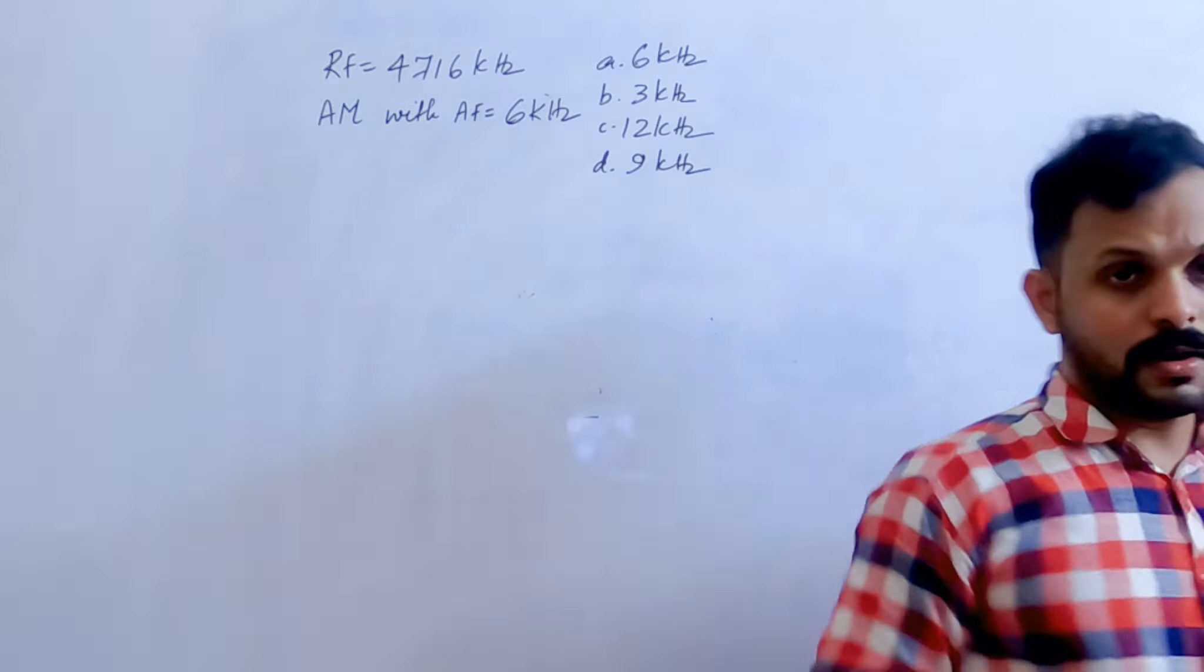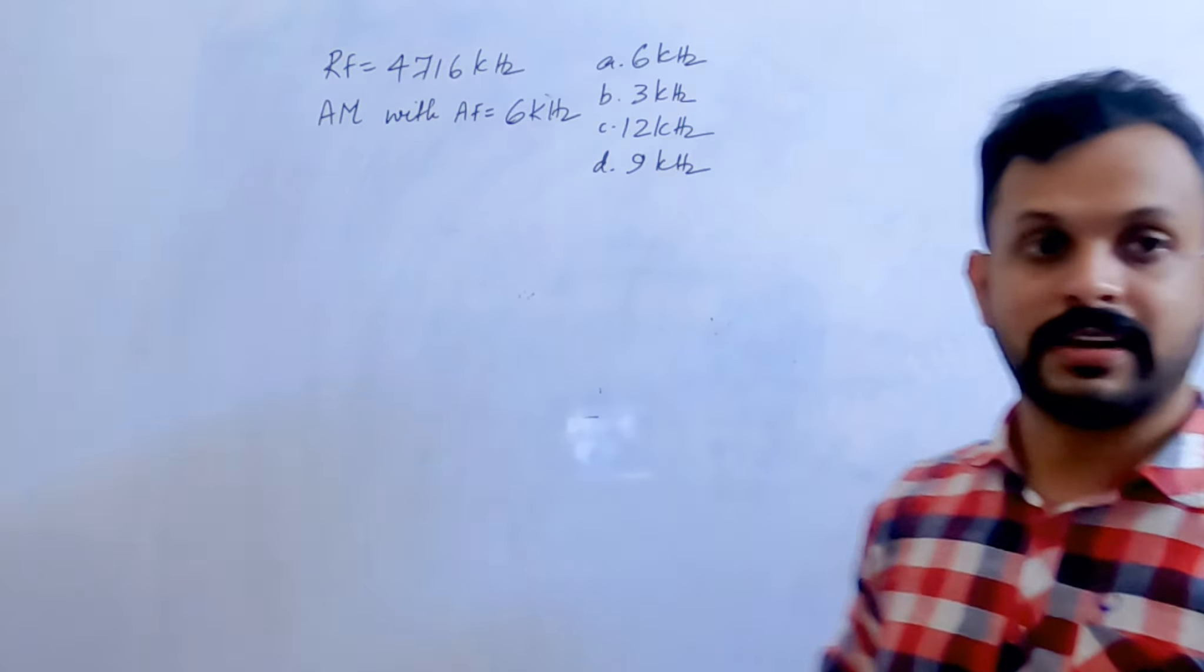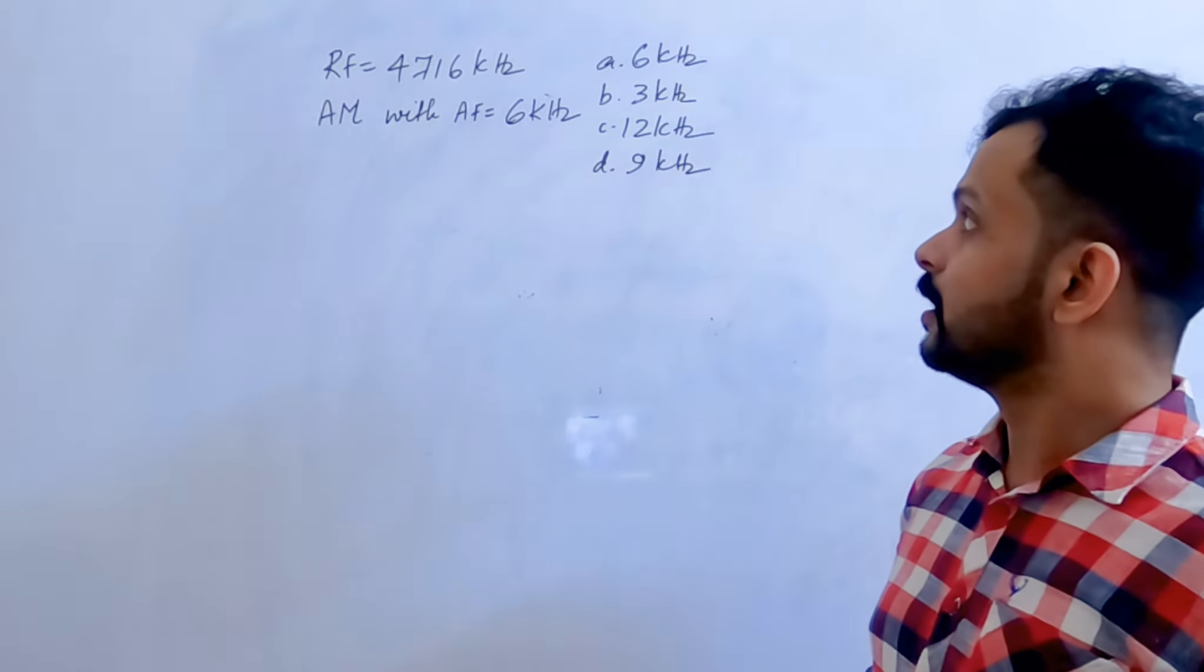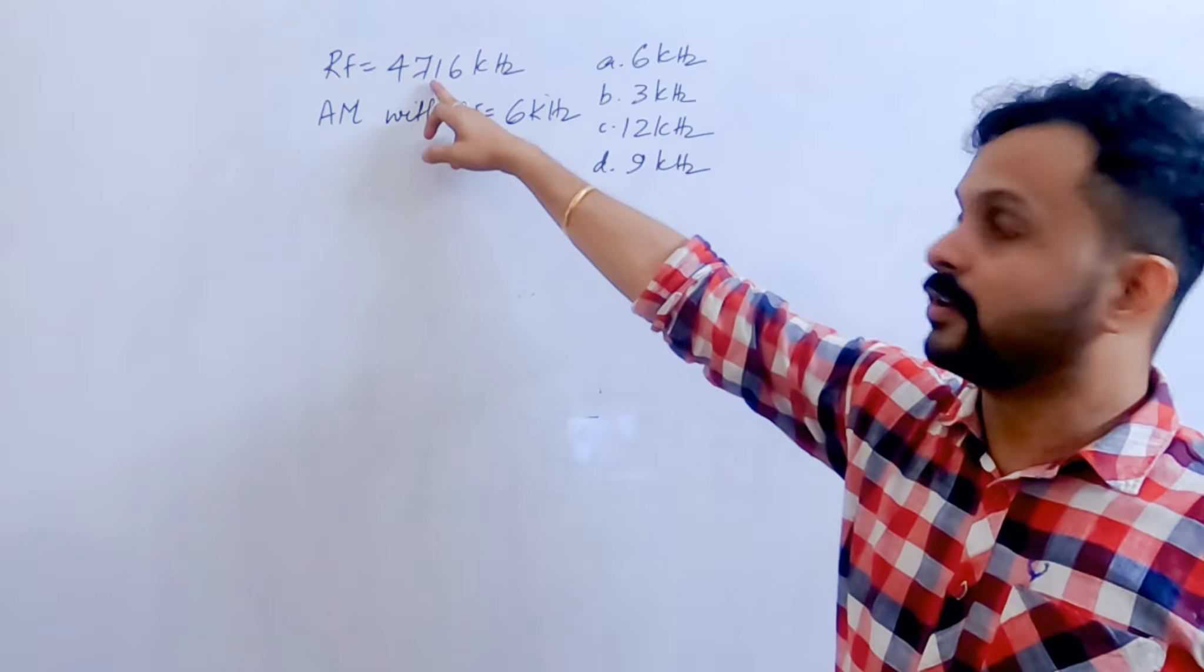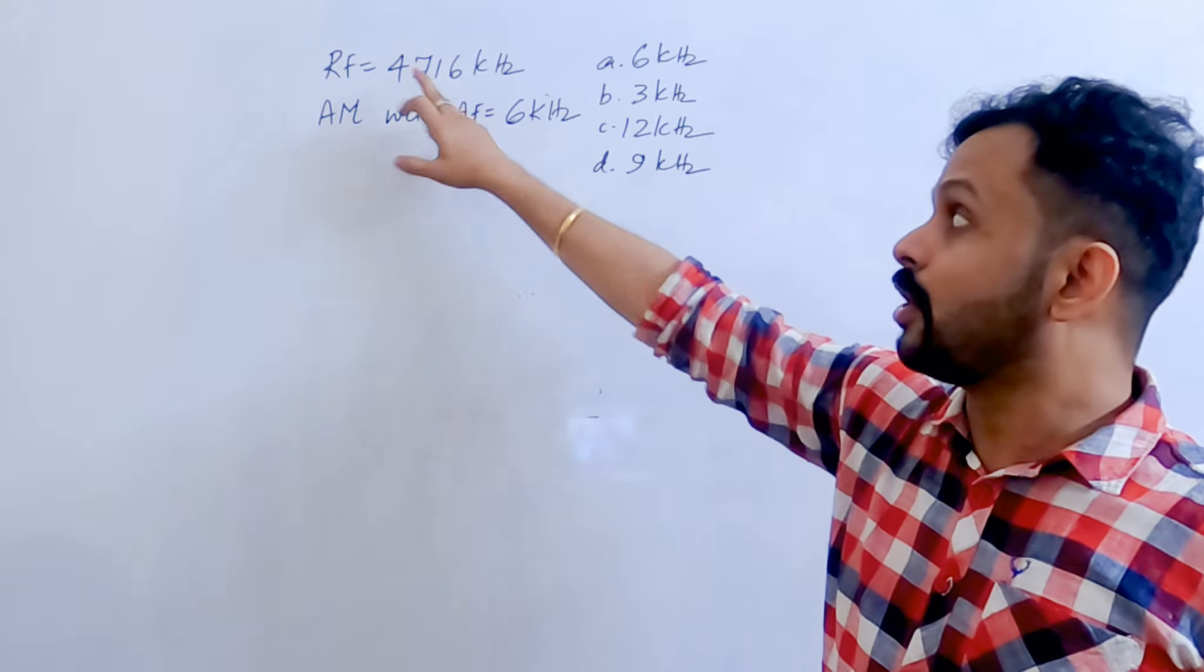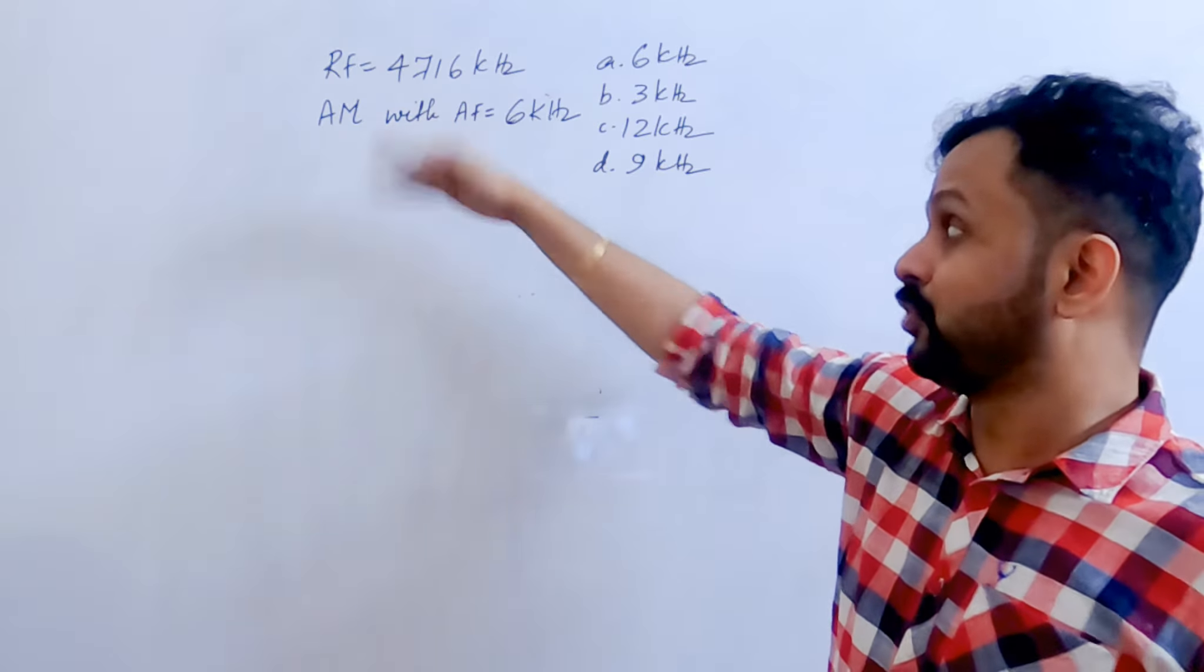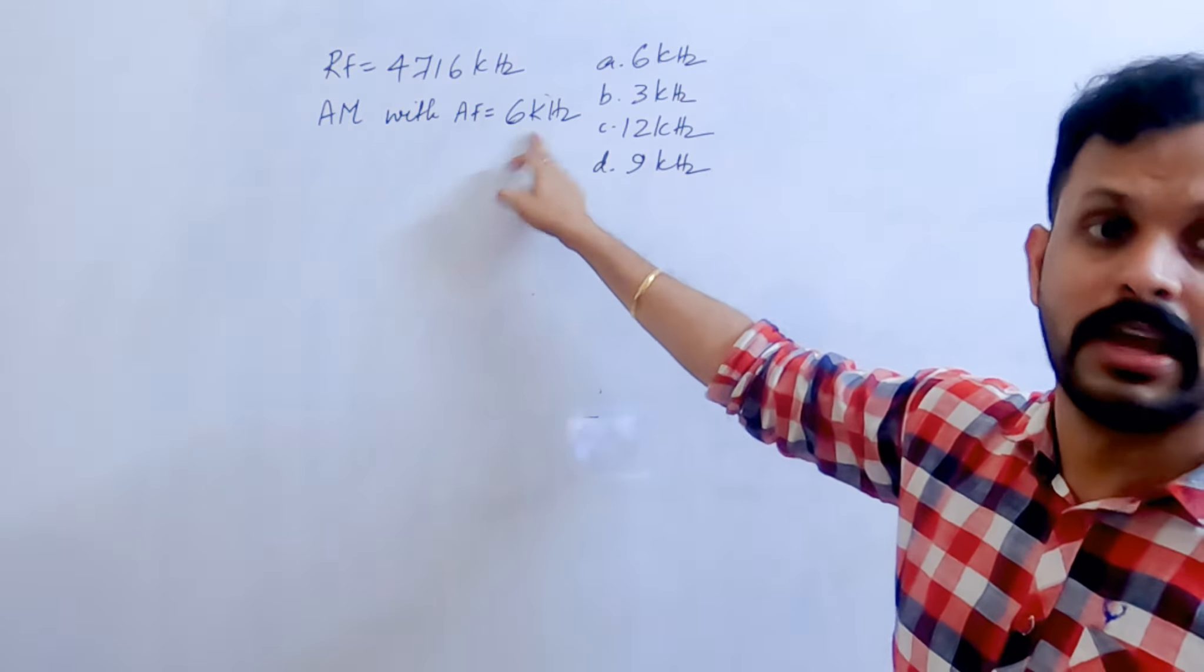So let's find out what is the bandwidth of the signal that is produced. You have a radio frequency of 4716 kHz amplitude modulated with an audio frequency of 6 kHz. Which of these is...